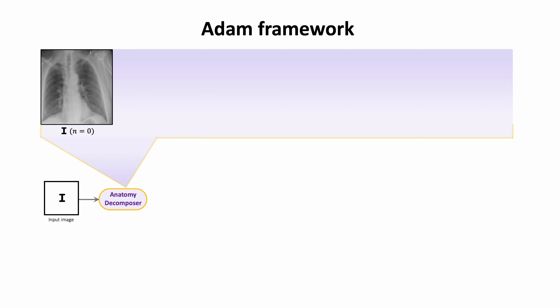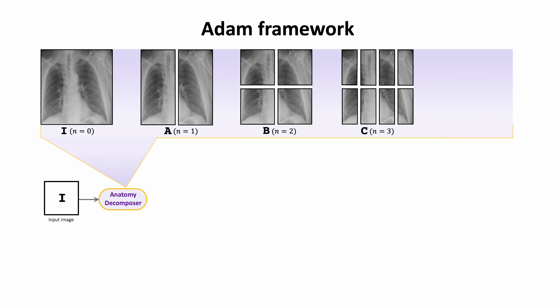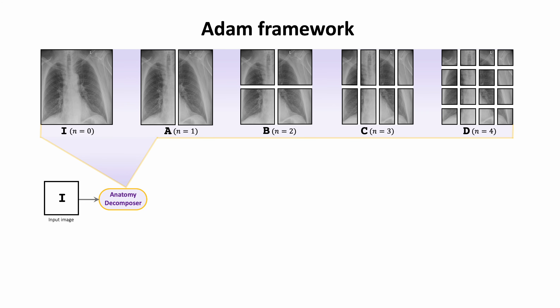Given an image, we pass it to our Anatomy Decomposer component, which decomposes the anatomy into a hierarchy of parts. We gradually increase the anatomical structures' granularity at each training stage. This enables the model to first learn anatomy at a coarser-grain level and then use this learned knowledge as effective contextual clues for learning more fine-grained anatomical structures.